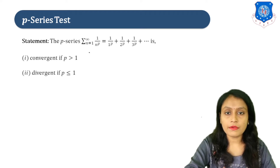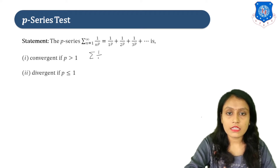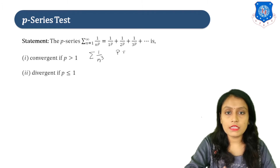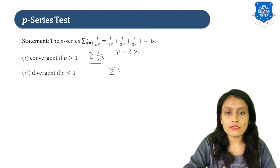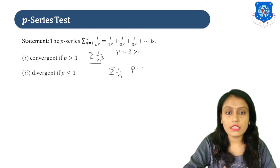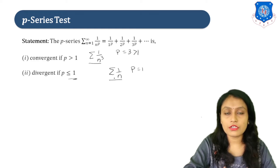For example, we have the series 1 upon n cube. Here P is equal to 3, which is greater than 1, so this series is convergent by the P-series test. Suppose we have the series 1 upon n — here P is equal to 1, so this series 1 upon n is divergent by the P-series test.